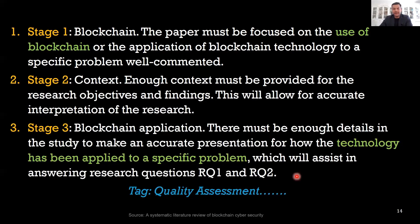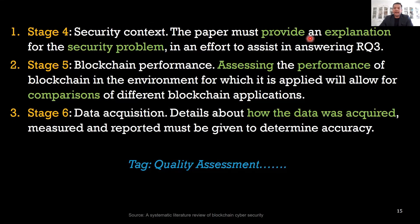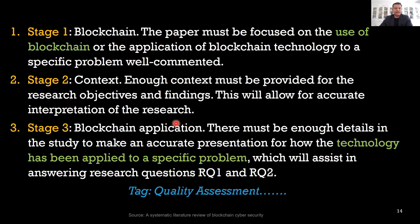Another criterion: the fourth criteria is that the paper must provide an explanation for the security problem in an effort to assist answering research question three, and so on. By developing a quality assessment criteria, you are in fact further screening papers and selecting only those that will help you answer your identified research questions.